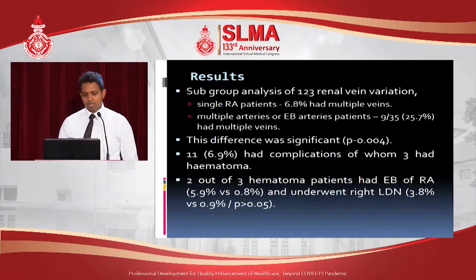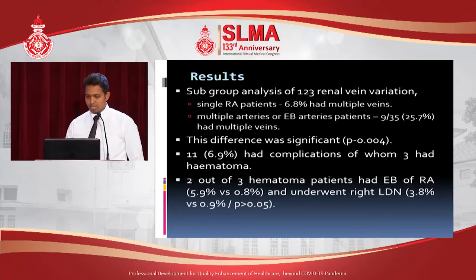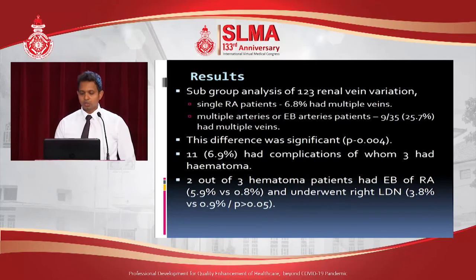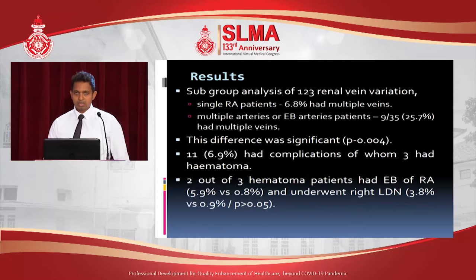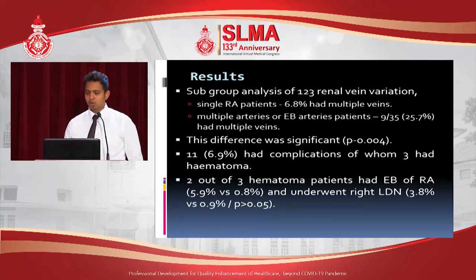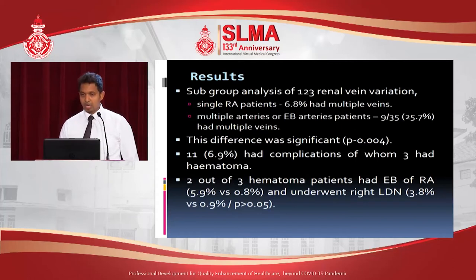A subgroup analysis of 123 renal vein variations was performed. Single renal artery patients — 6.8% — had multiple veins. Multiple arteries or early branching artery patients, 9 out of 35, had multiple veins. This difference was significant. 11 cases, or 6.9%, had complications, of which 3 had hematoma. 2 out of 3 hematoma patients had early branching of renal arteries and underwent right live donor nephrectomy.